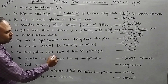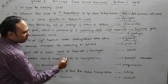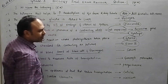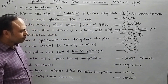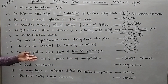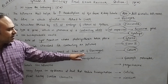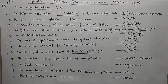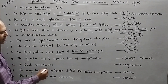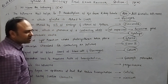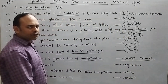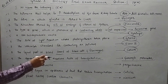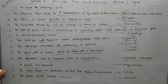Eighth: the liquid part of blood which does not have blood cells and fibrinogen — that is called serum. Ninth: the apparatus used to measure the rate of transpiration — immediately write ganong potometer. Don't confuse the spelling.